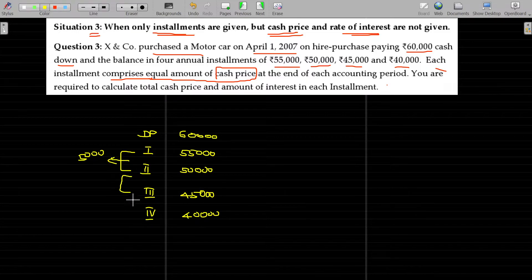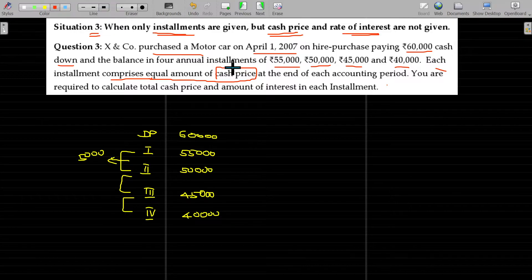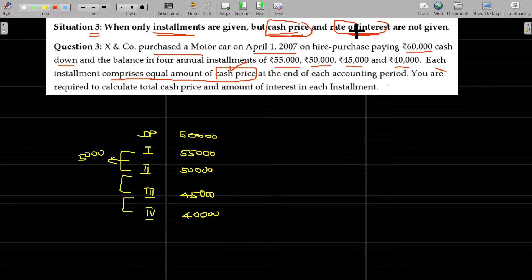Second and third, third and fourth - the cash price remains equal. The difference between subsequent two installments is the interest for the last installment.